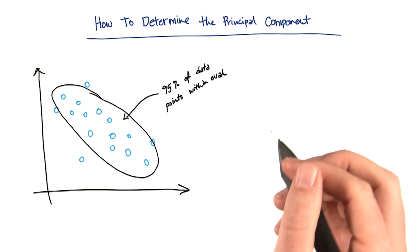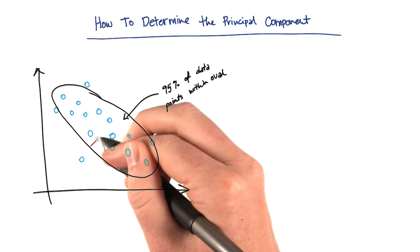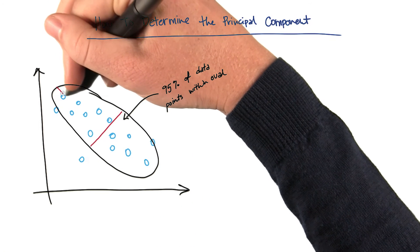Now this oval can be parameterized using two numbers. One of them is the distance across the narrowest point. The other one is the distance across the longest point.